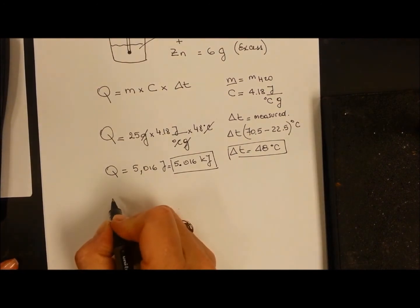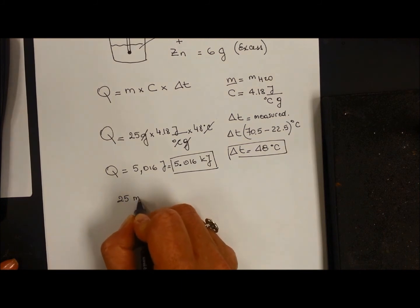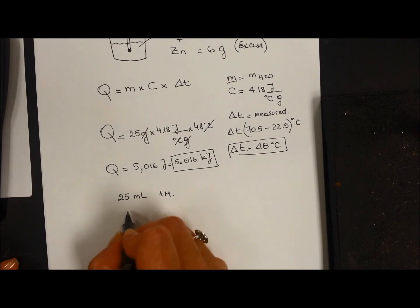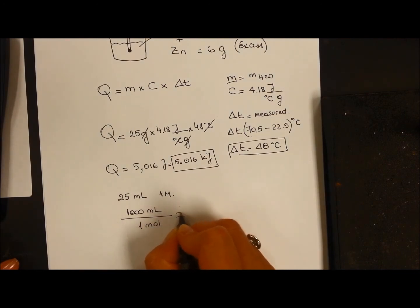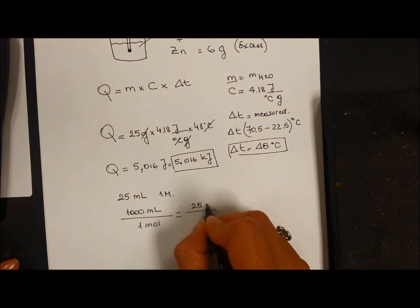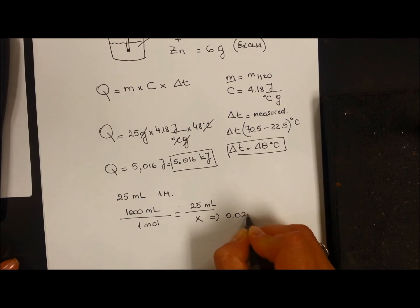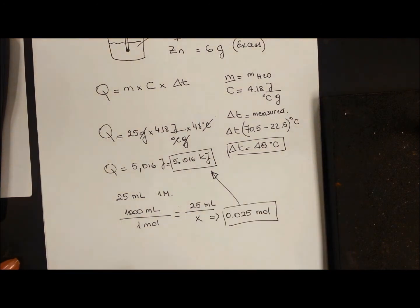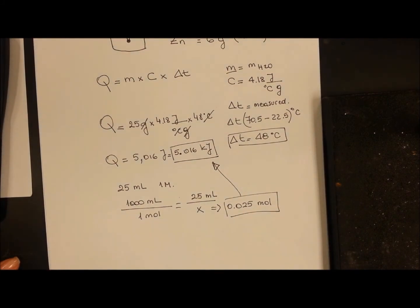We know that the solution that we have is 25 milliliters of a solution one molar. So we know that in 1,000 milliliters, we are going to have one mole of the solute. And in 25 milliliters, of course, we are going to have X where X is 0.025 moles. So the amount of heat that we calculated corresponds to that amount of moles. We need to calculate how much it would be for one mole.